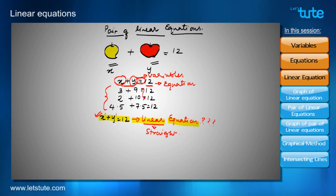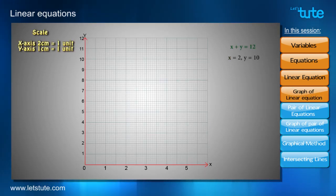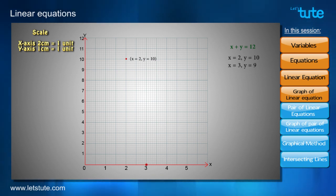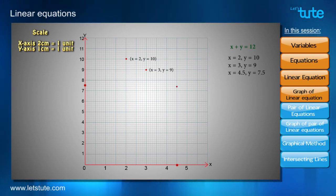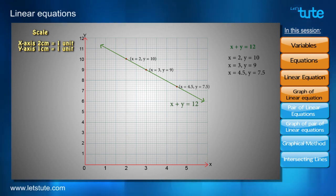To verify that this equation gives a straight line, let's use a graph with the values we assumed for x plus y equals 12. We plot the point x=2, y=10; then x=3, y=9; and then x=4.5, y=7.5. After joining all three points, we can see that we get a straight line. This confirms that when the powers of variables are 1, the equation gives a straight line — hence it is called a linear equation.